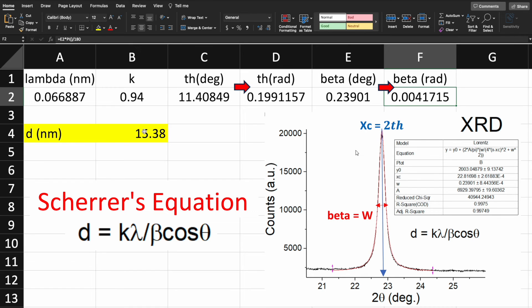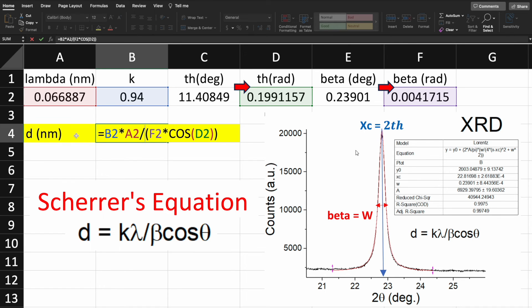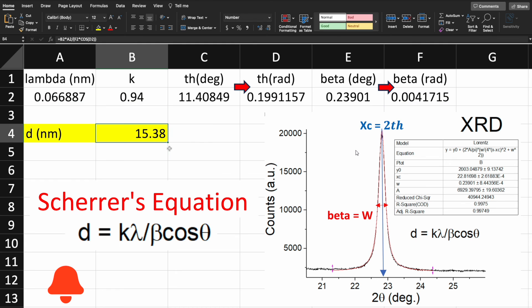Now we have to write down the formula, that is the Scherrer equation, which is d equals k times lambda divided by, in brackets, beta times cos theta. Enter, and the grain size is 15.38 nanometers. I hope through this video you learned how to calculate grain size.